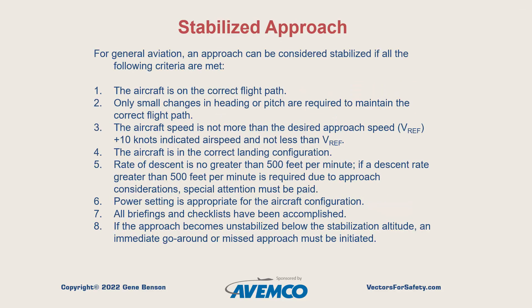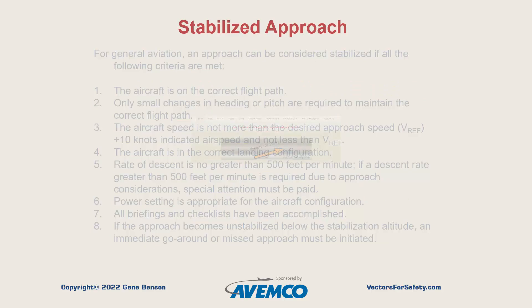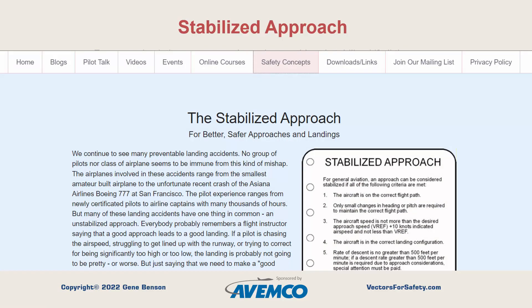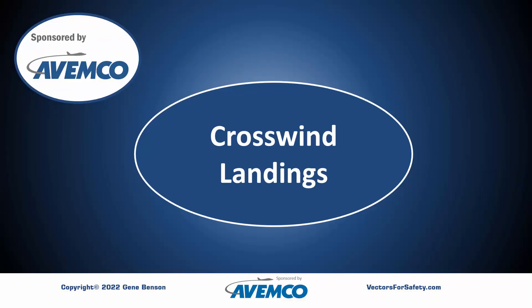Here are some generally recognized criteria for an approach to be considered stabilized. Since we are keeping this brief, we will just refer you to the Vectors for Safety website in the Safety Concepts section — visit vectorsforsafety.com and click on the Safety Concepts tab at the top of the page. Lots more information on the stabilized approach will appear. A significant number of runway excursions happen during the execution of a crosswind landing, so we will talk about that subject briefly.